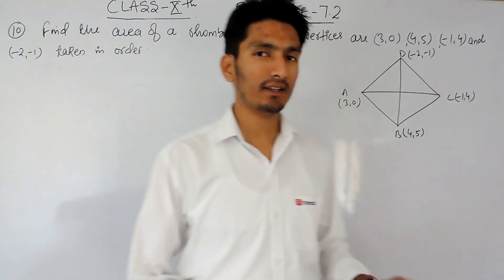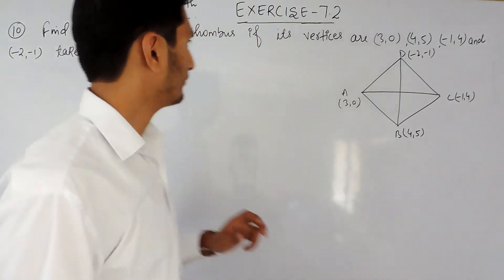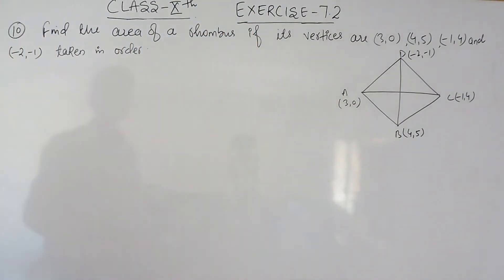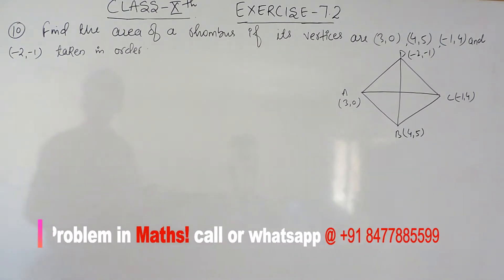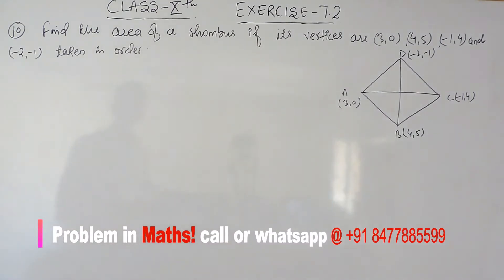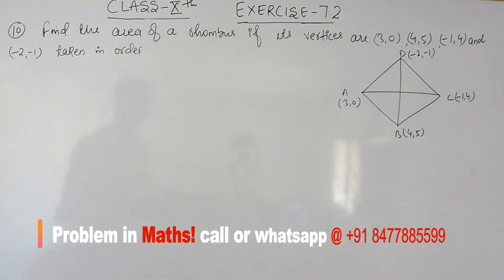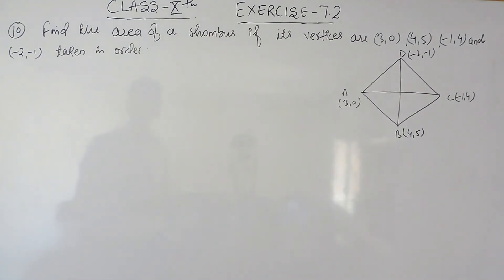Hello everyone. In this video we are going to solve question number 10 which is exercise 7.2. The question says find the area of a rhombus if its vertices are (3,0), (4,5), (-1,4) and (-2,-1) taken in order.